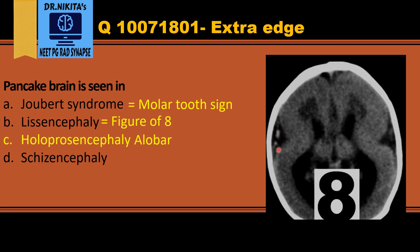Lissencephaly has a figure-of-eight appearance, due to shallow sylvian fissures. Lissencephaly is a smooth brain without any gyri — the smooth surface and shallow sylvian fissures give it the figure-of-eight appearance.